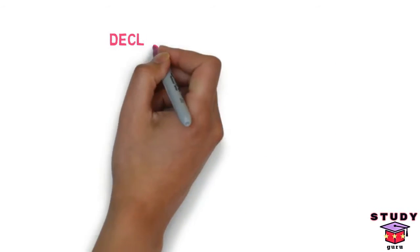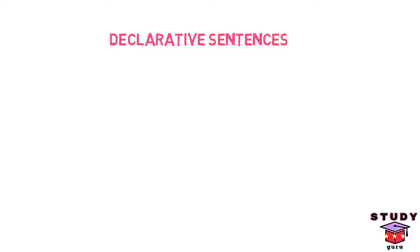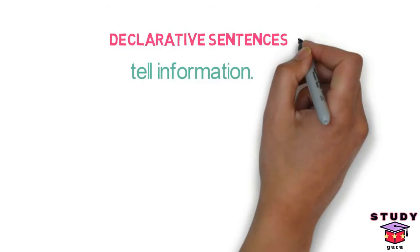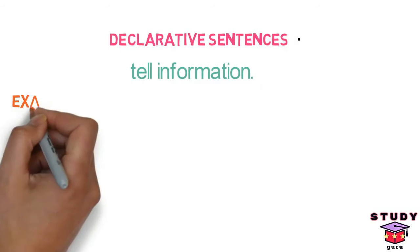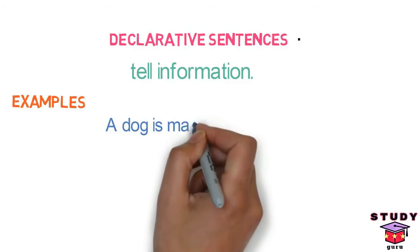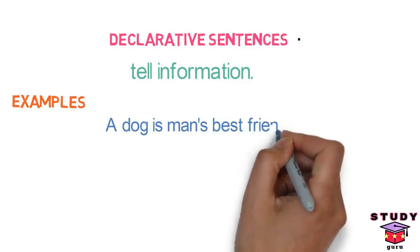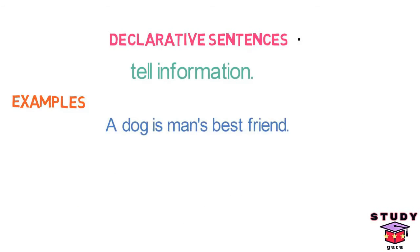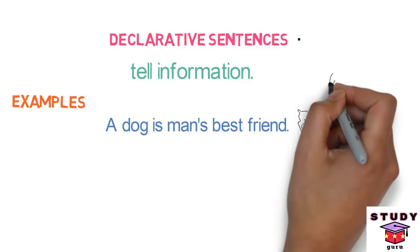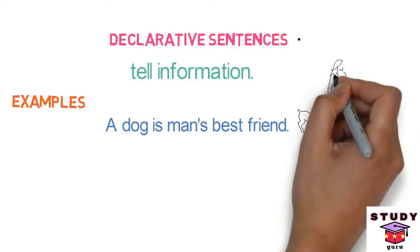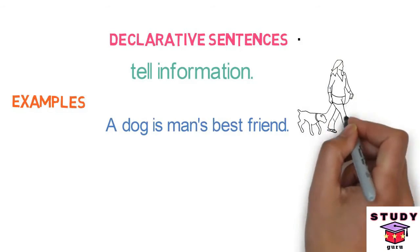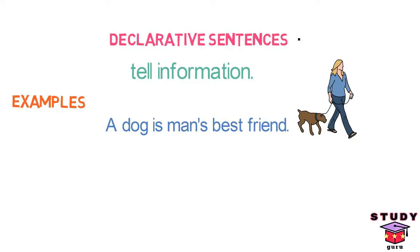Let's understand each of them. First, declarative sentences. Declarative sentences tell information about anything, and they end with a period. For example, 'A dog is man's best friend.' Here, we are telling information based on experiences that a dog is always a best friend of man.